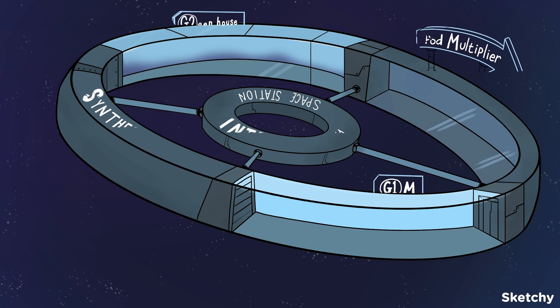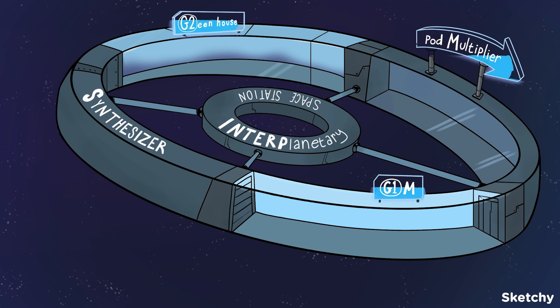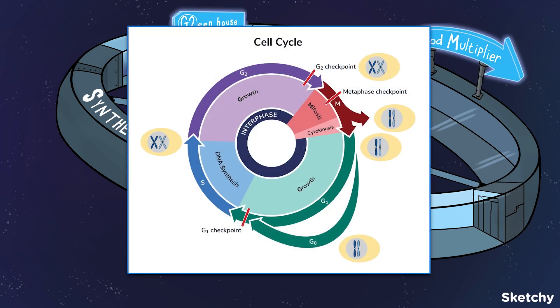The cell cycle is a series of events where a eukaryotic cell grows, replicates its genome, and then undergoes division. The cell cycle has two main parts: interphase and the mitotic, or M phase.